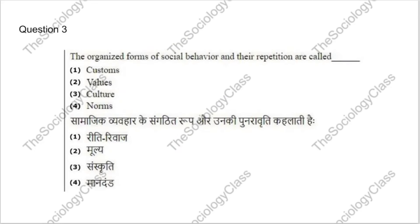Question 3: The organized form of social behavior and their repetition are called what? Options: custom, value, culture, or norms. The correct answer is option 1 — custom.